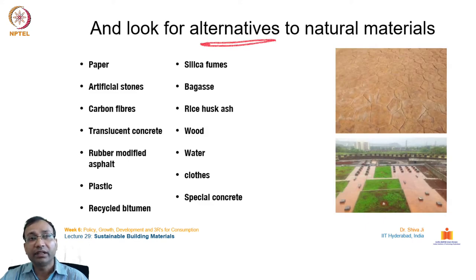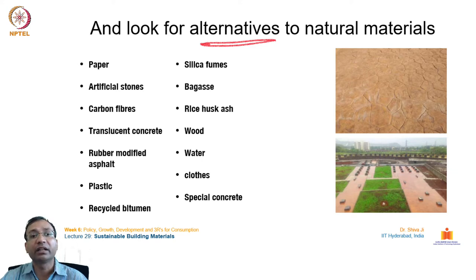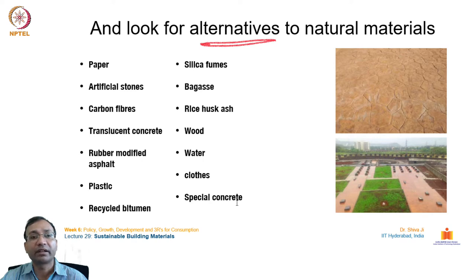In this slide, the focus is on materials that are still available in their natural form and condition — not highly or complexly processed — so they can be taken care of during dismantling, disintegrating, and disposing at the end of their life cycle. These could include paper, artificial stones, carbon fibers, translucent concrete, rubber-modified asphalt, plastic, recycled bitumen, silica fumes, crop husks, and fibers from discarded materials. These can find several applications in construction material categories.